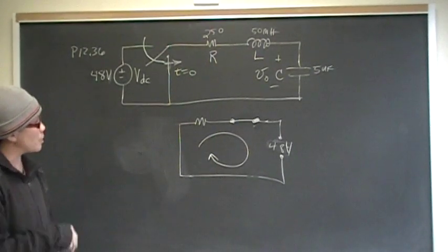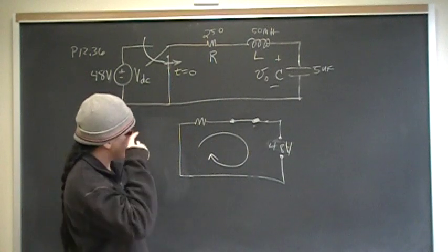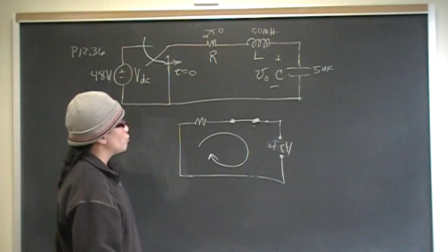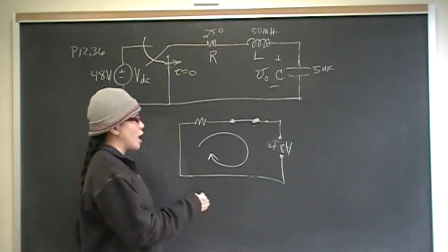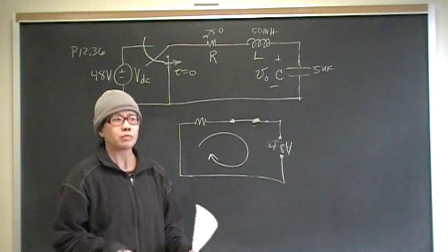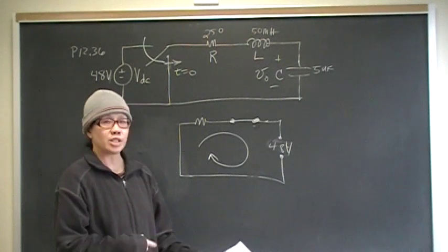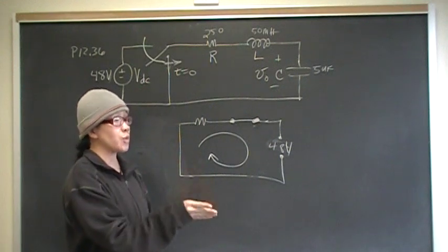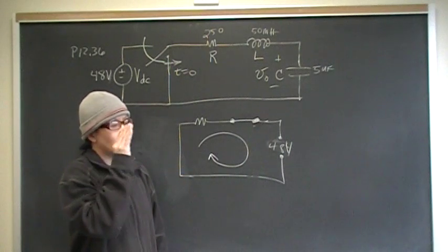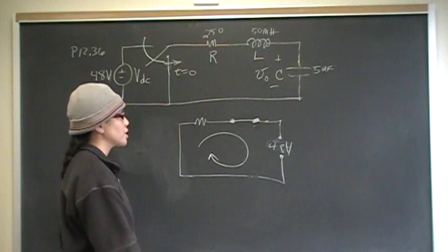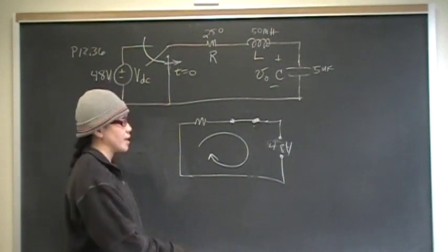To solve this problem, you're going to write the general equation using KVL for this circuit. Once you do that, you will do a Laplace transform of your equation into the S domain. Then you will do partial fraction expansion to force your equation to match up with values from the inverse Laplace transform table in order to bring it back into the time domain.